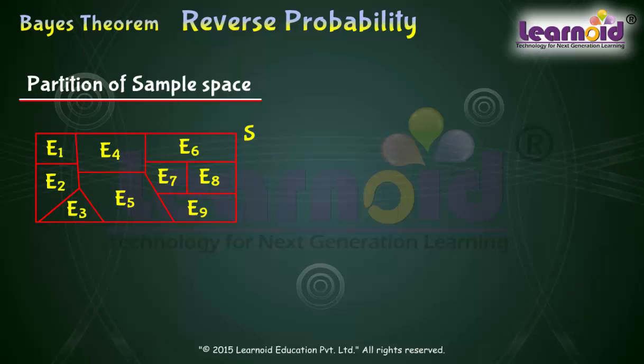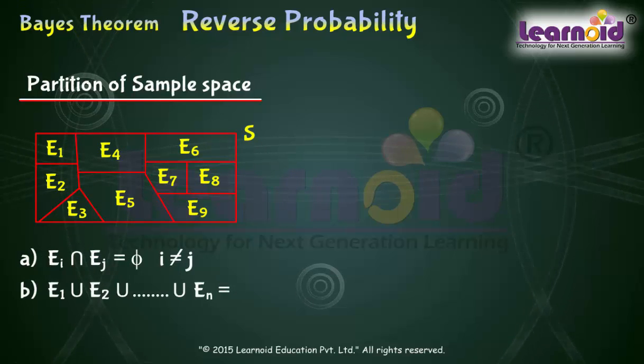Events E1, E2, and so on up to EN represents a partition of sample space S if no two events have anything common, i.e., the intersection of any two events is a null set. EI intersection EJ is a null set. And union of all partition is the sample space S and probability of the events should not be zero.